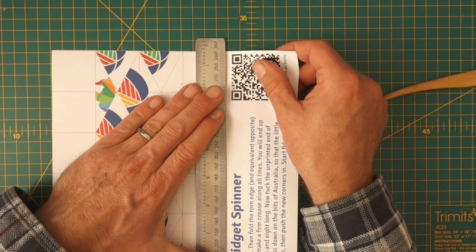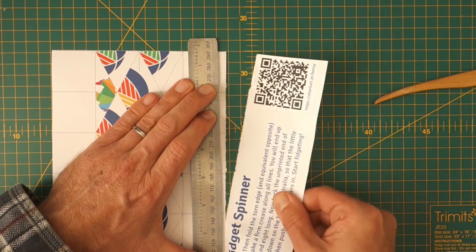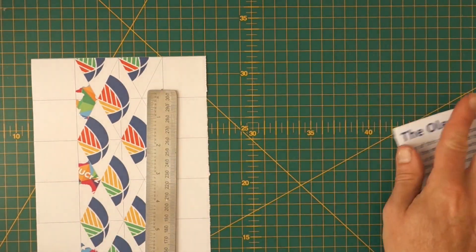Again, a ruler may help. It doesn't really matter, that edge isn't showing so it doesn't have to be the best ever.